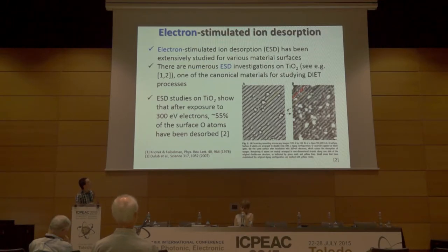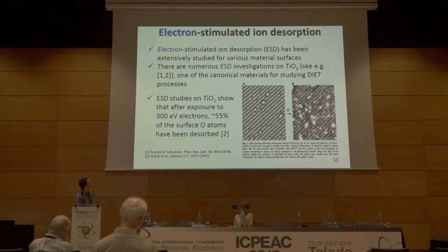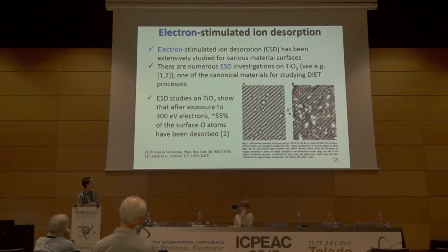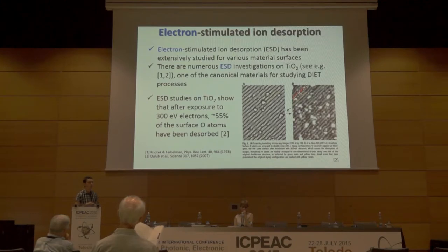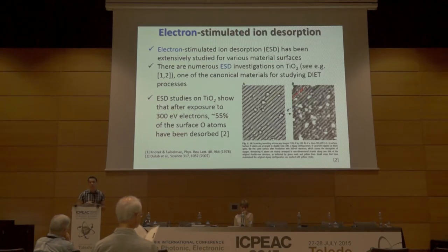In this paper, where this image was taken — published in Science in 2007 — they estimated that if you bombard the TiO2 surface with a beam of 300 eV electrons, more than half of the surface oxygen atoms are actually desorbed because of electron-stimulated desorption.